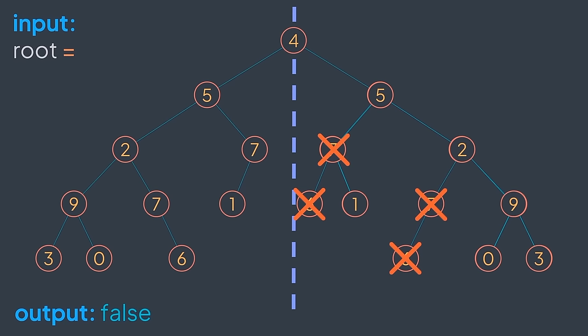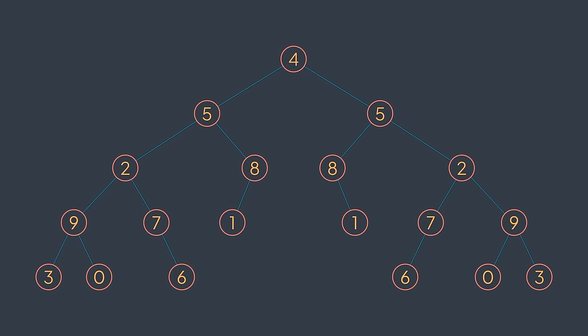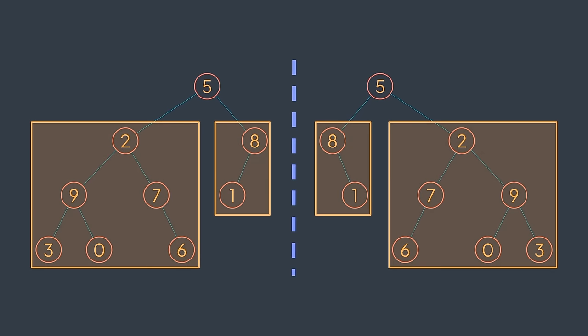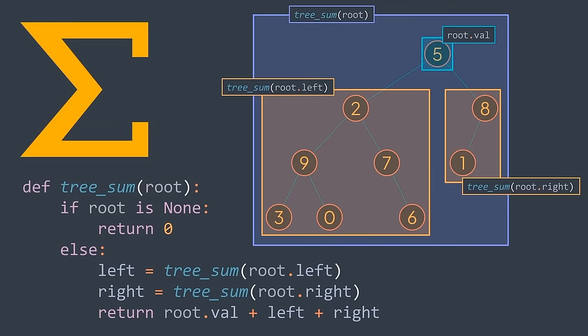To check if a tree is symmetric, what we really need to check is that the left and right subtrees are symmetric to each other. For tree problems, the solution is usually done recursively — we process the root, then call the function on both subtrees and combine the results. For example, to get the sum of elements of a binary tree, we take the root value and recursively call the function on both subtrees, then return root_value + sum(left) + sum(right). This traversal is called depth first search, and it's how we solve the majority of tree problems.